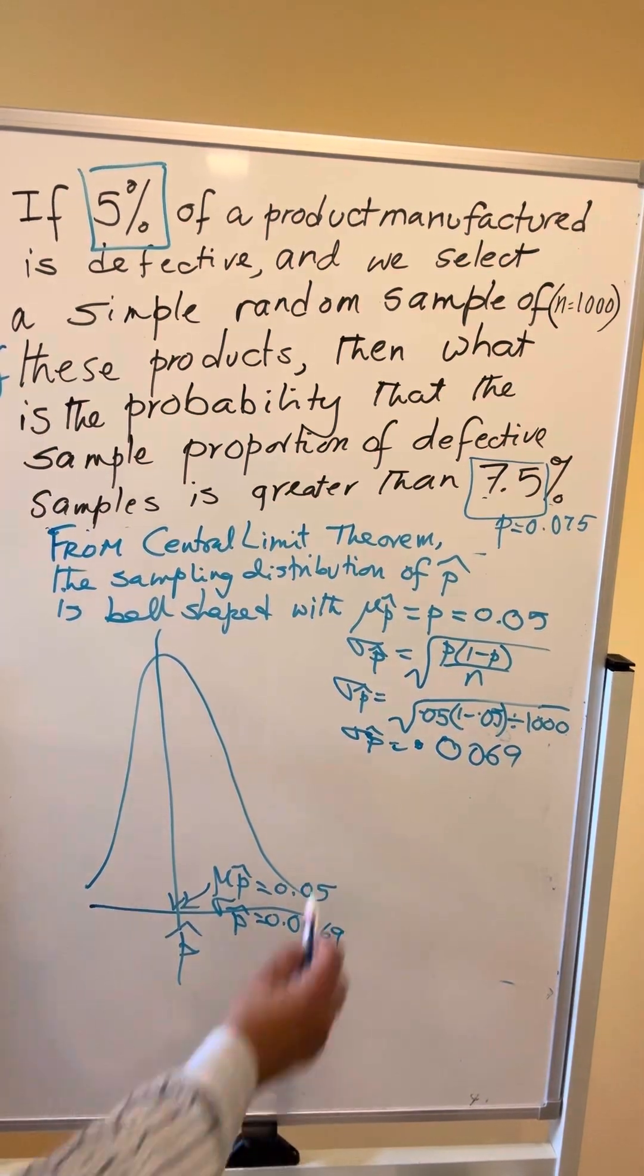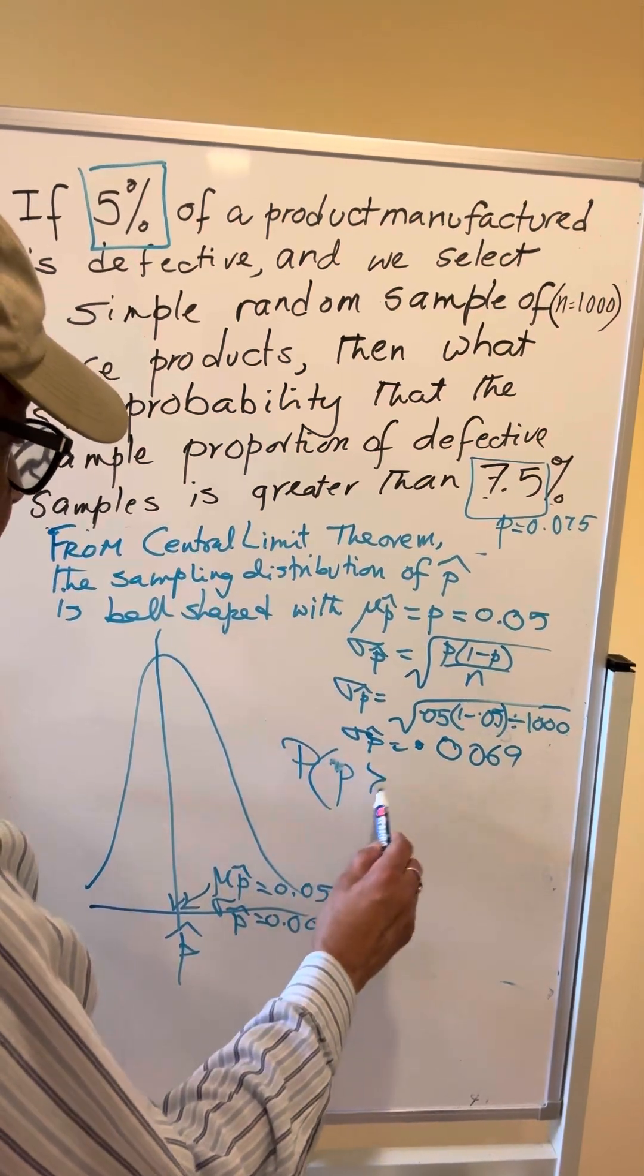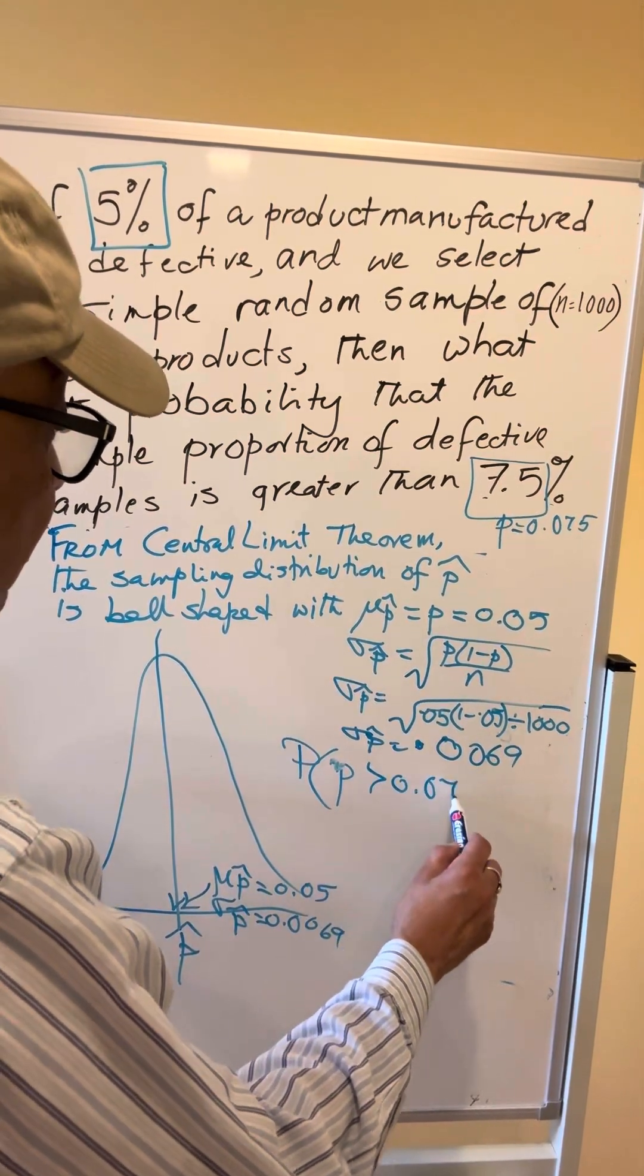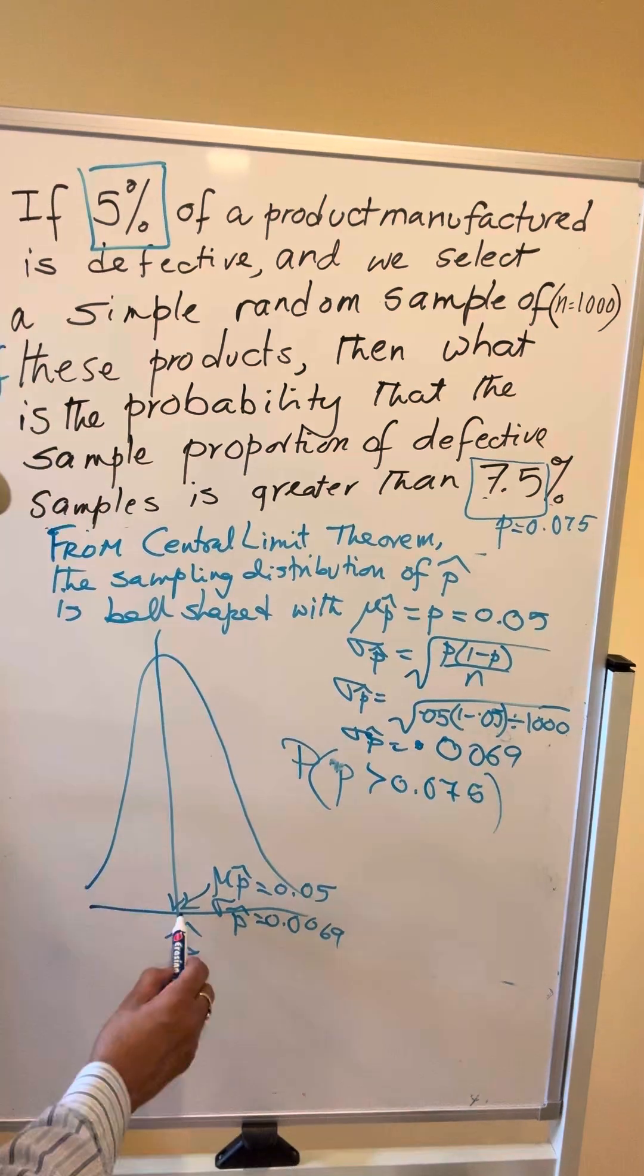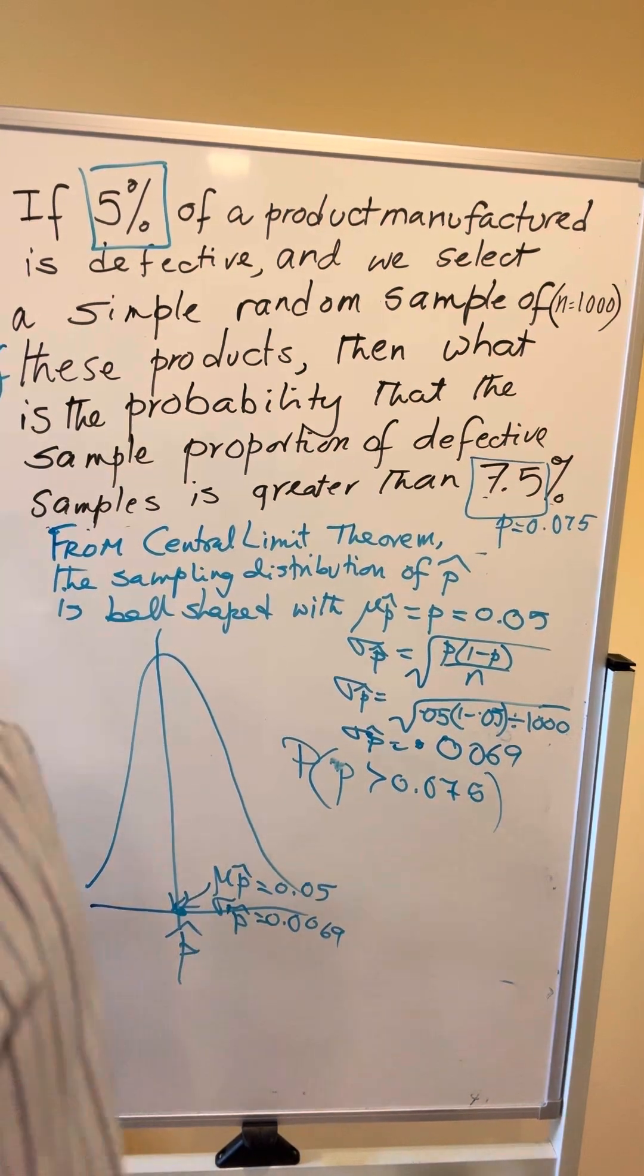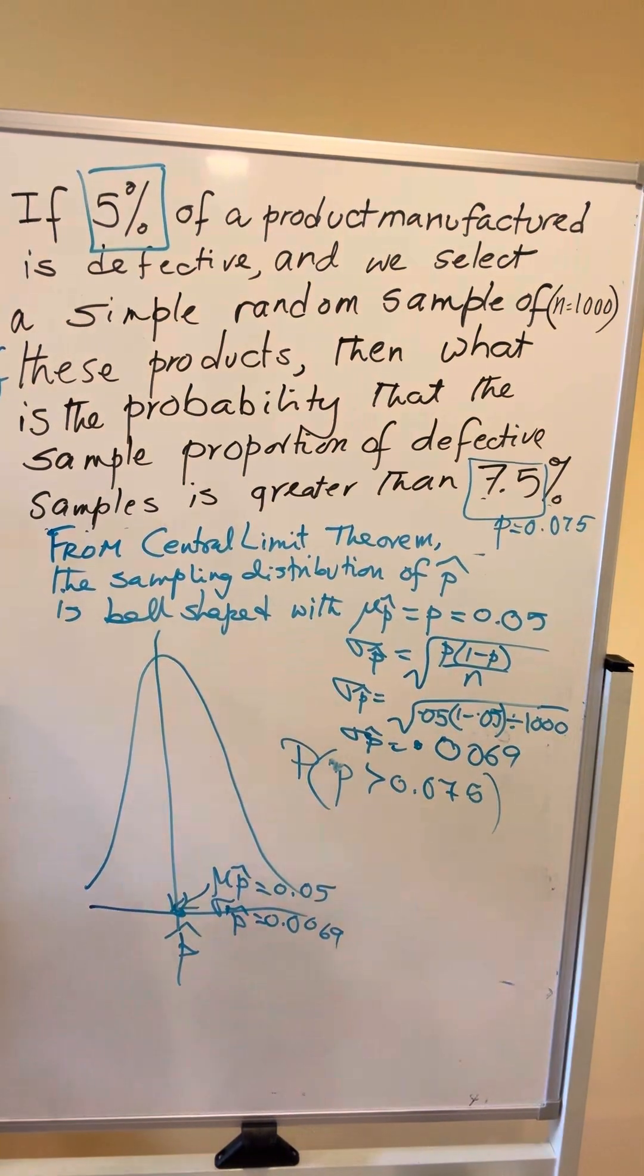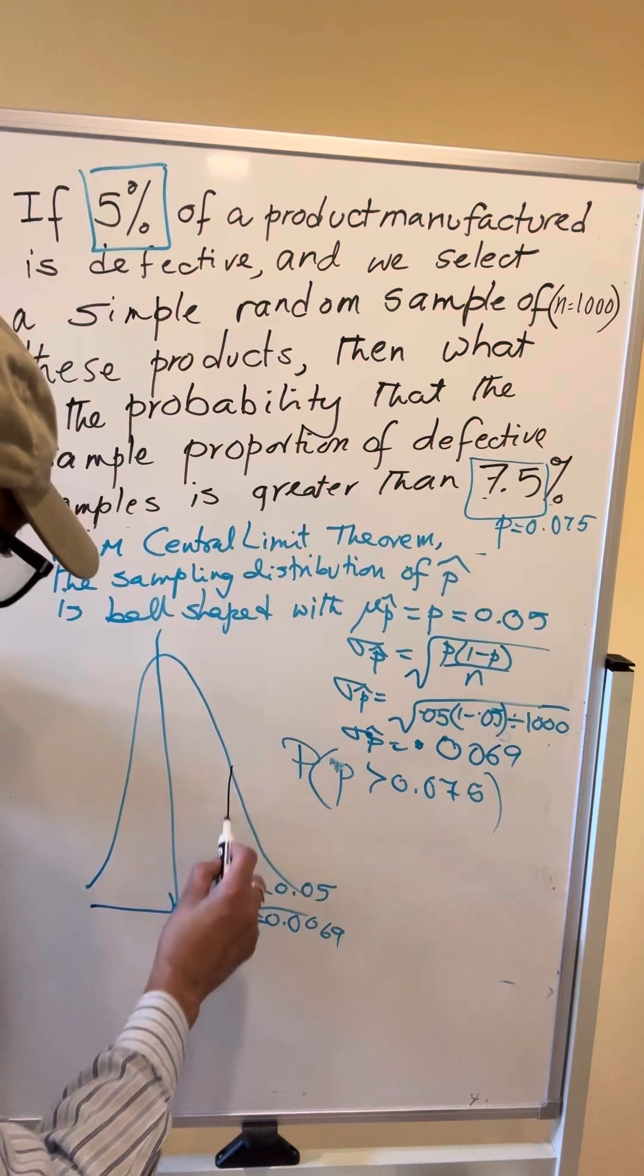Now we want to find out what is the probability that the population proportion is greater than 0.075. Now 0.05 is at the center, so 0.075 will be somewhere to the right of the mean, on the right of the axis, something like this.